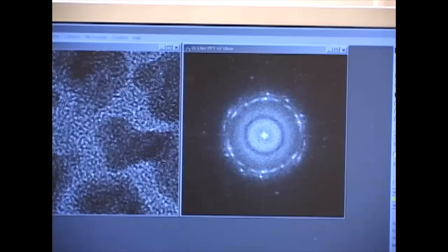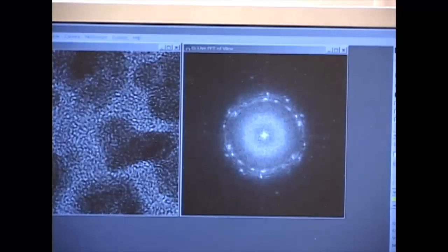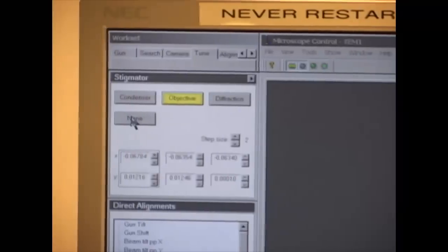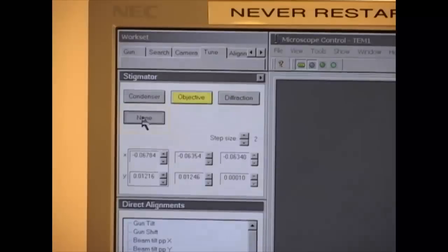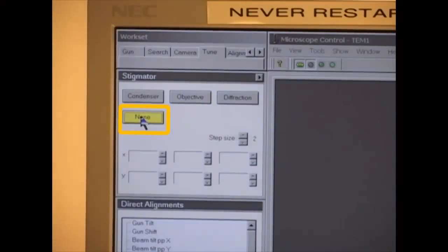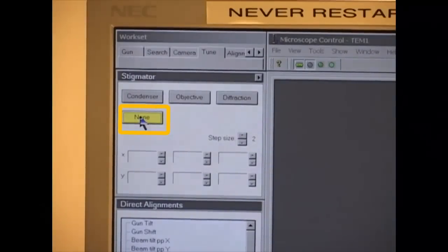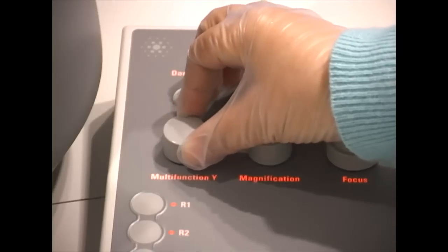The ring of spots is the diffraction pattern from the gold nanoparticles. After the correction, click None to disable the stigmation adjustment.